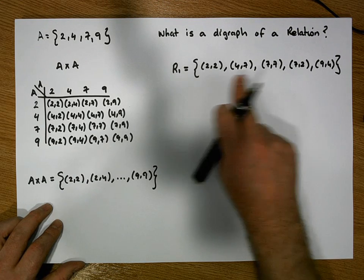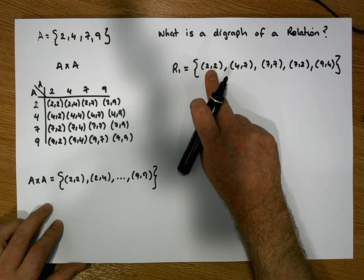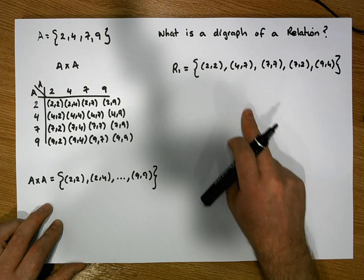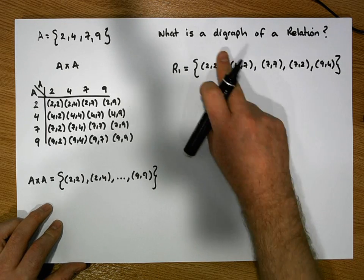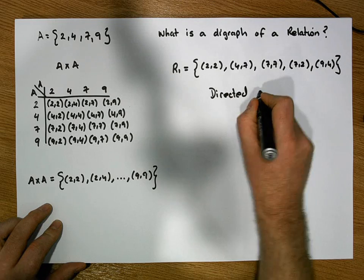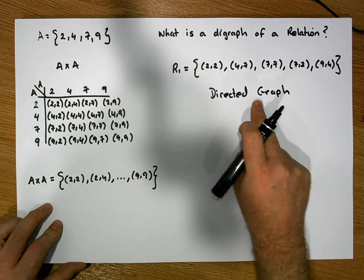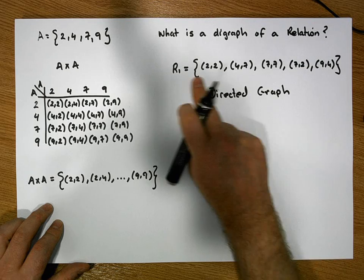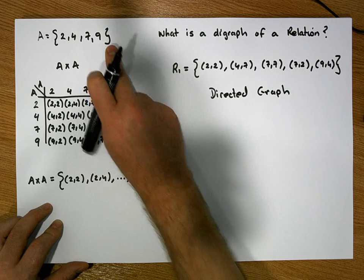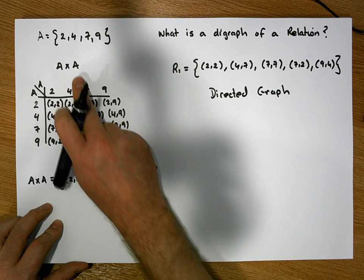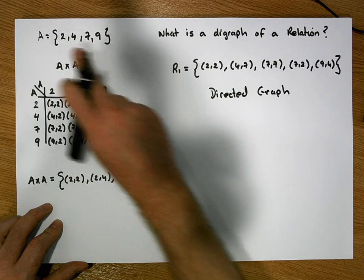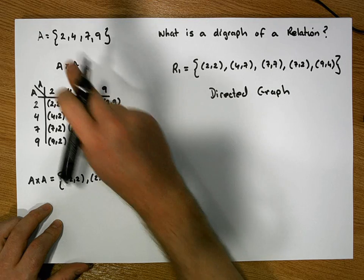This particular way of representing a relation — listing the ordered pairs — is one technique for visualizing a relation, but we can also visualize the relation using what's known as a digraph or directed graph. What's important when constructing a directed graph of a relation is that a relation is built on a set, specifically from the cross product of the set with itself. So the first thing we need to do is create a number of nodes for the elements of that set.